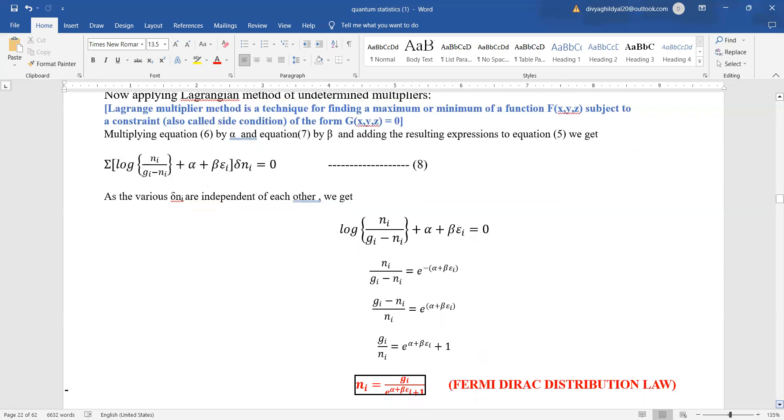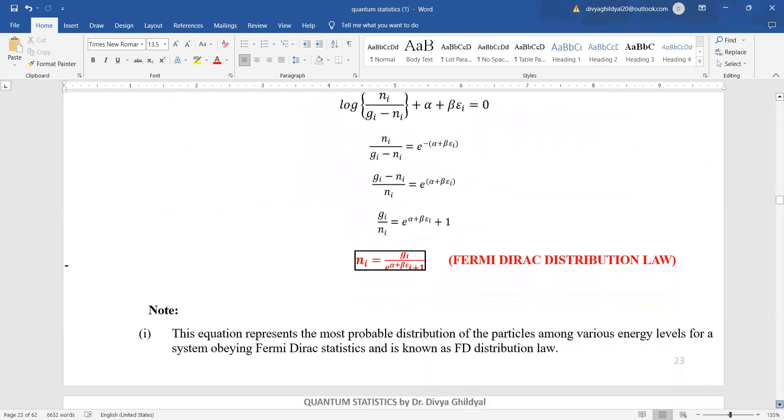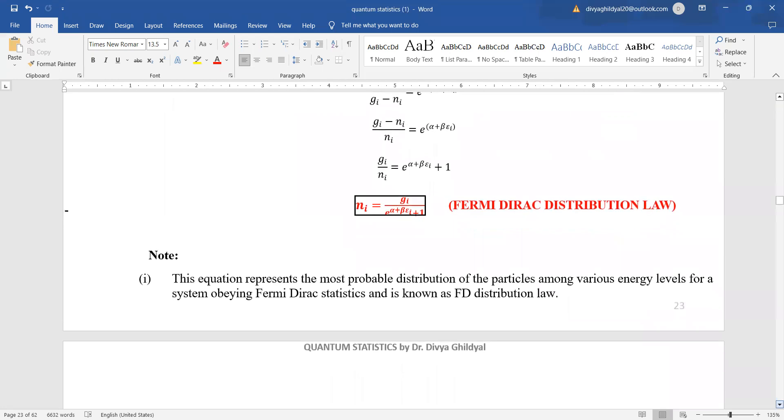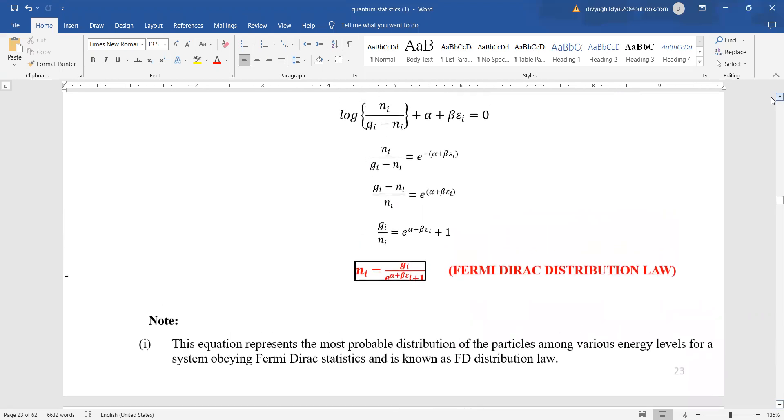We get the equation in the form log ni upon gi minus ni plus alpha plus beta epsilon i. Alpha and beta we have multiplied those equations, then we set the terms and we get ni equals gi upon e to the power of alpha plus beta epsilon i plus 1. In Maxwell Boltzmann, that plus 1 was not there. So this is known as Fermi Dirac distribution law.